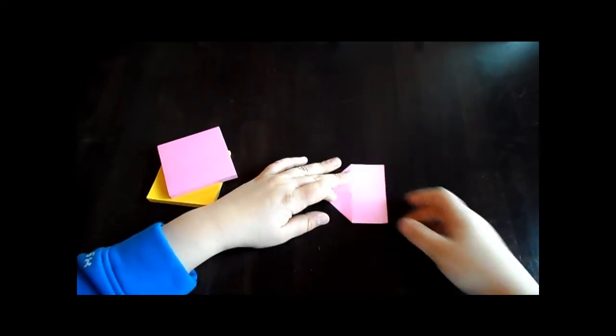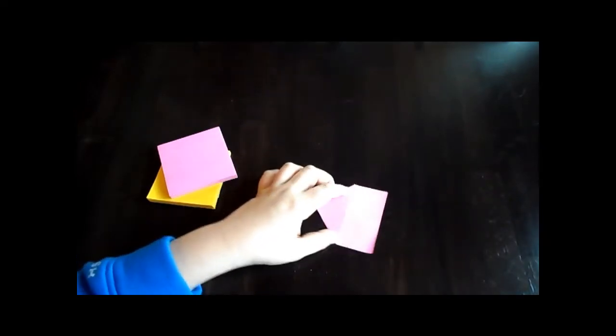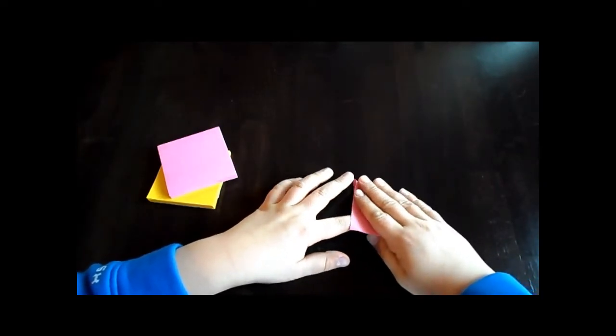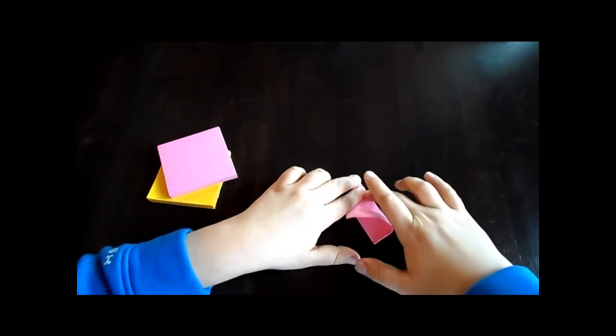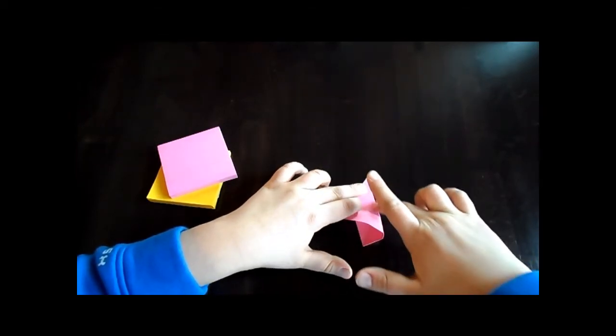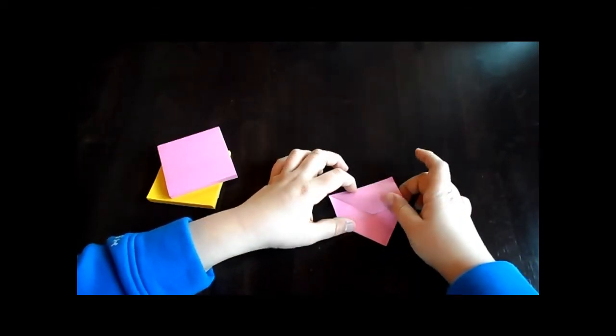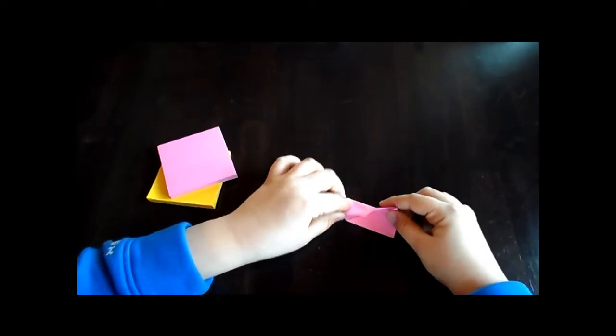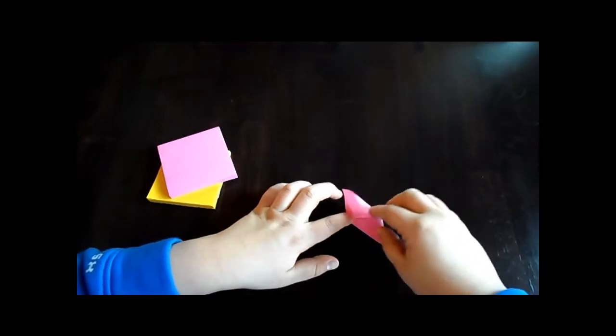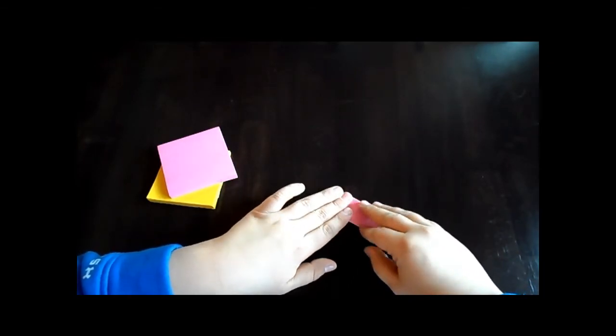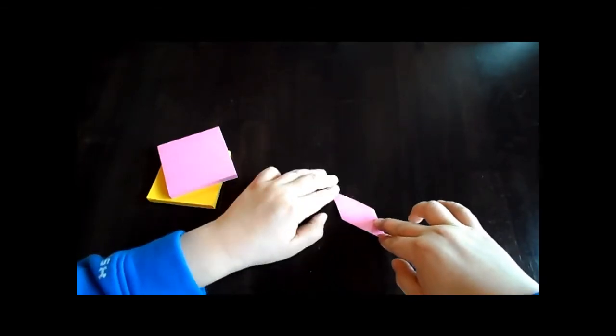You want to fold like this. This just makes the next step a lot easier, so this is kind of optional. What you do is you fold there, fold back, and then just press down on everything. And there you go, that's one unit to it.